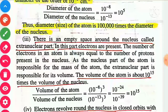There is empty space around the nucleus called the extranuclear part. In this part, electrons are found to be present. The number of electrons in an atom is always equal to the number of protons, meaning an atom is electrically neutral — the charge on the electron equals the charge on the proton but with opposite signs, so they cancel each other. The nucleus is responsible for the mass of the atom, since the mass of protons is very much greater than the mass of electrons.